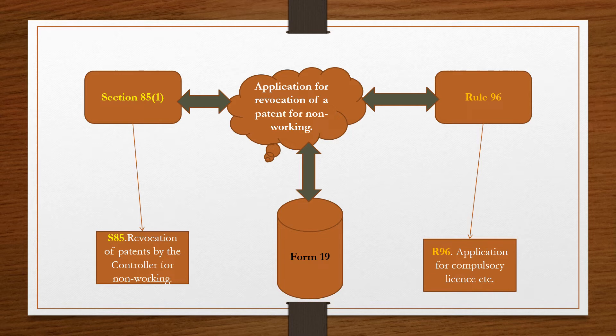The title is Application for Revocation of a Patent for Non-Working. That means, if a patent is not working, then an application for revocation can be applied. The related section is 85 and the related rule is 96.